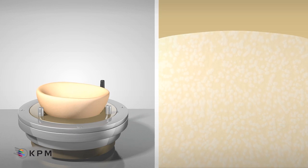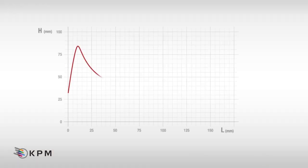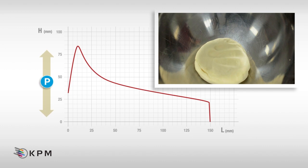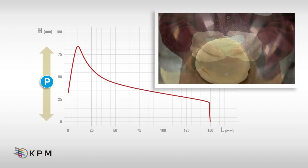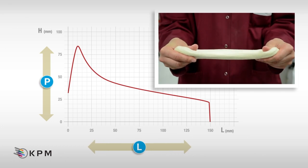The Alveograph can be used to analyze all types of wheat – soft, hard, and durum. It provides four key measurements. P value represents dough tenacity – in other words, its capacity to resist deformation. L value corresponds to the maximum amount of air the bubble is able to contain and represents dough extensibility.